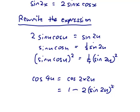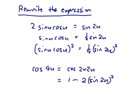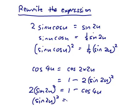And we want to rearrange that. So we'll move this over to the other side. So 2 sin 2u squared. And we'll move the cos 4u over to the other side. And then we'll divide by the 2. sin 2u squared is a half minus a half of cos 4u.